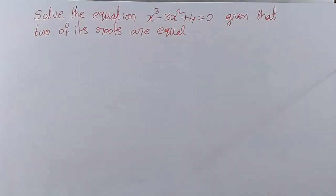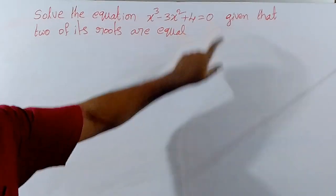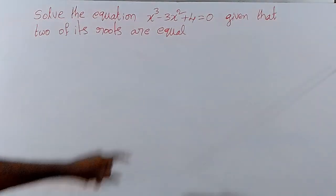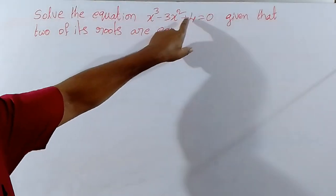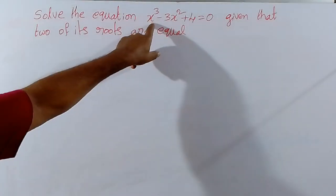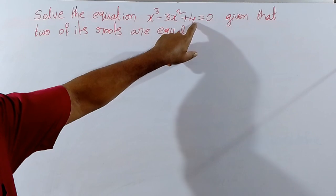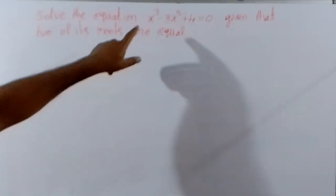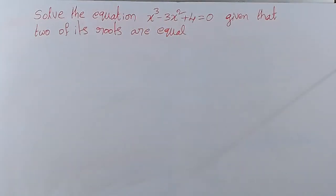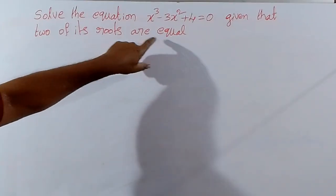Here, solve the equation x cube minus 3x square plus 4 equal to 0. This equation x cube minus 3x square plus 4 equal to 0. What is the highest exponent? This is square, this is cube, this is no exponent. So highest exponent is the third degree — that means it is a cubic equation. And given that two of its roots are equal.